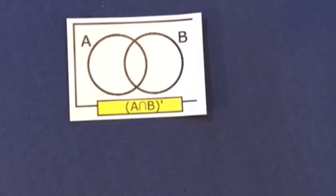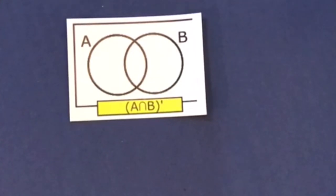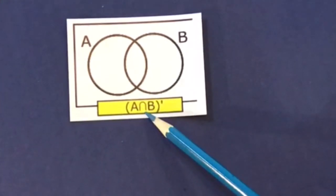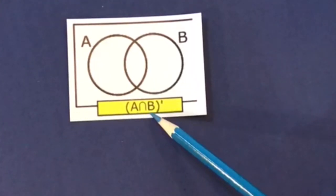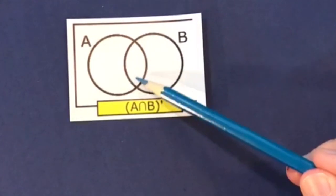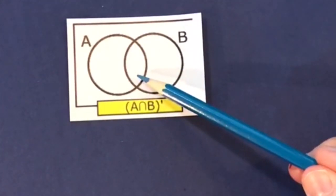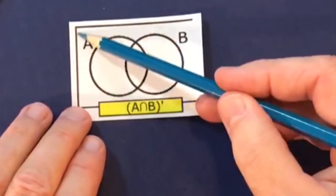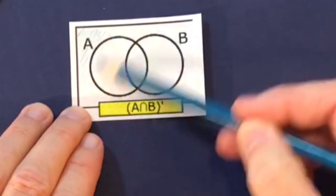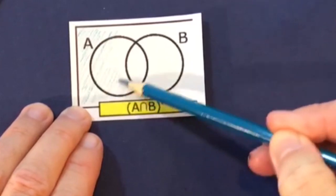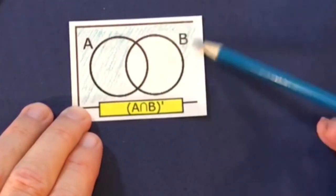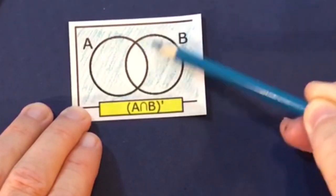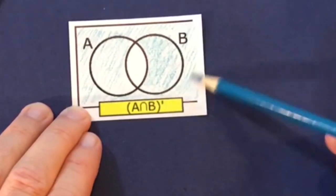This time we have A intersection B inside the brackets with the complement sign outside. A intersection B is the region where A and B overlap. We have to colour in everything that's not in that small region, so it's a big colouring job — everything apart from that little intersection region.